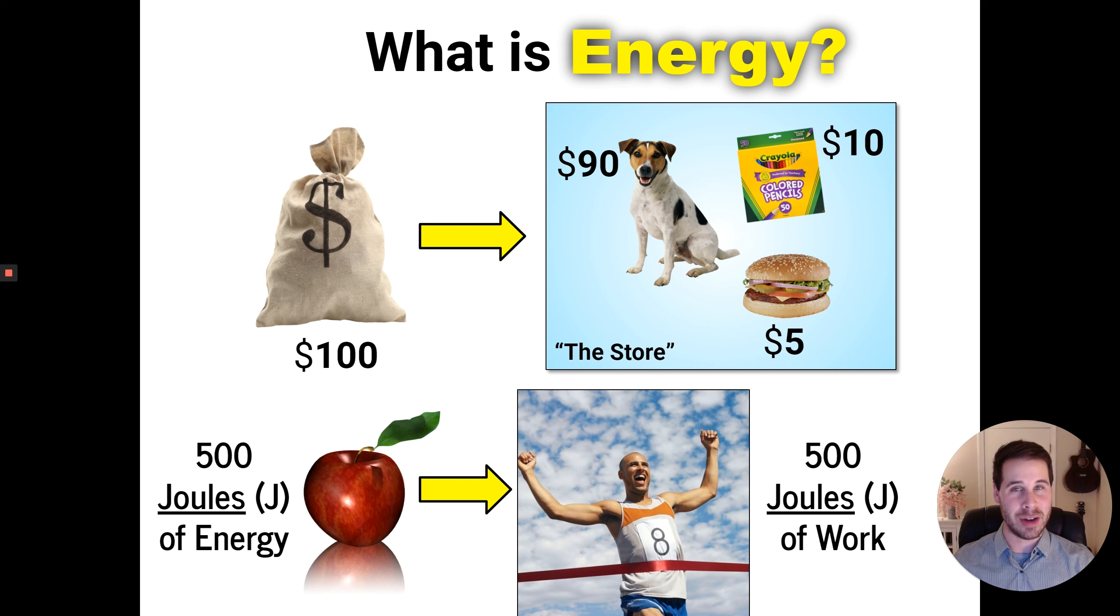Similarly, when it comes to energy, we're going to say things like having 500 joules of energy can get you 500 joules of work. You need to have currency in order to purchase items. Now that goes for money very literally, but for energy, instead of talking about dollars as our currency, we're going to talk about joules of energy as the currency. What are you purchasing? Well, instead of physical items, you're purchasing actions, which we're going to call work.